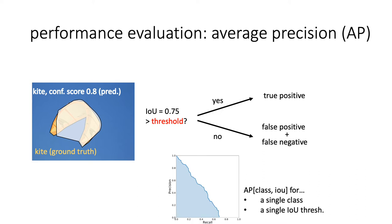Before moving to instance segmentation approaches, I'd like to highlight the difference between semantic and instance segmentation evaluation once more. Unlike semantic segmentation where we use IoU, average precision can be significantly lowered by multiple small spurious predicted segments, even if their area is very small.